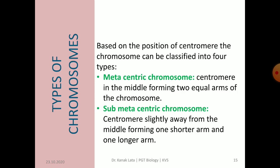Now it is about types of chromosomes. On the basis of the position of the centromere, chromosomes are of four different types: metacentric, submetacentric, acrocentric, and telocentric.